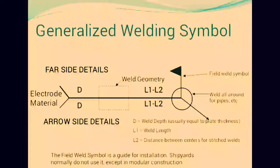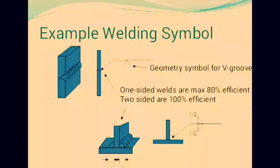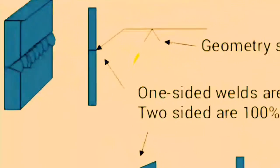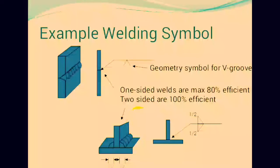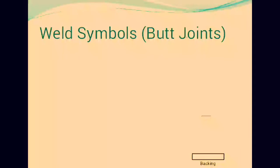Corner joint is used for joining corners. Generalized welding symbols include details like part side details, electrode materials, and weld geometry. Examples of welding symbols show geometry symbols for these groups. One-sided welds are maximum 80% and two-sided welds are 100% for better joining.